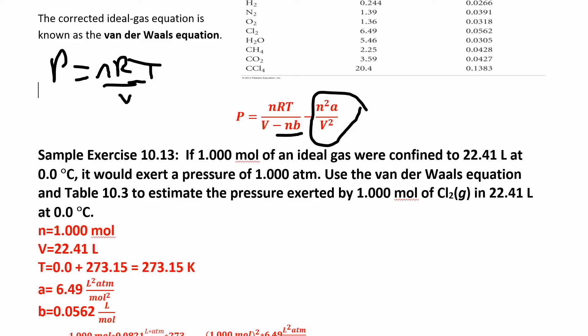In this problem, they tell you you have one mole of an ideal gas, they give you the volume, the temperature, and it would exert a certain amount of pressure. Use the van der Waals equation to estimate the pressure exerted by one mole of this gas at this volume and temperature.